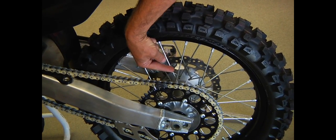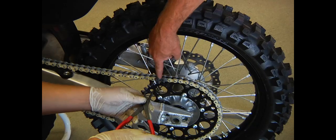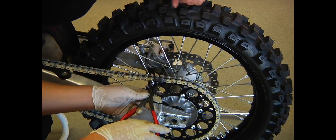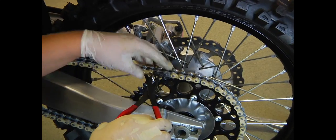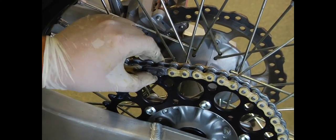So we want to make sure that the clip is pointing this way, the opening, so that the rounded part is facing this way. So as the wheel spins, there's no chance of it opening the clip up. And just pop the clip back on. We're ready to go.